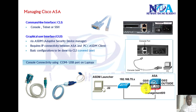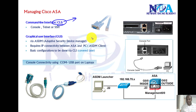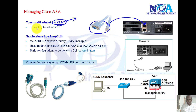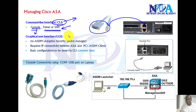Managing the Cisco ASA can be done either by the command line, just like we do it on the routers. We can connect a console cable to the console port and manage it via console, or if we have IP connectivity to the Ethernet port, we can manage it using Telnet or SSH.